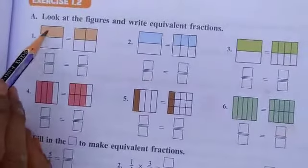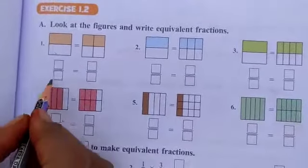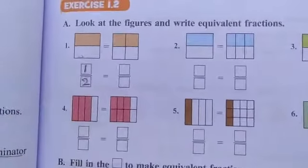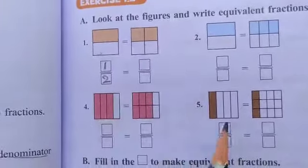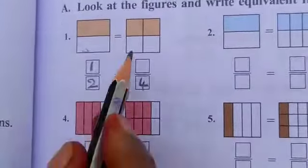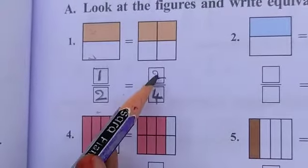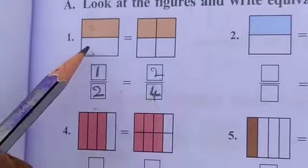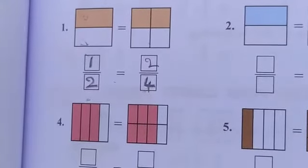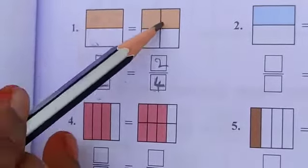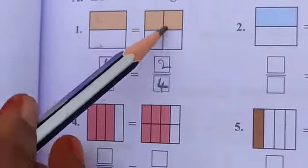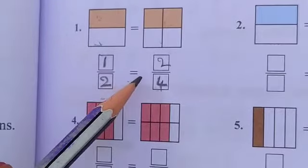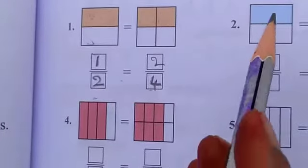First problem: this figure is divided into two equal parts, so we write denominator 2. One part is shaded, so we write 1 in the numerator. In the next figure, there are four total parts and two parts are shaded. So 1 by 2 is equal to 2 by 4.